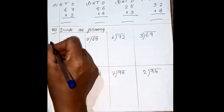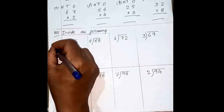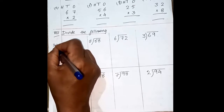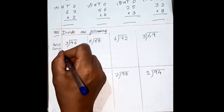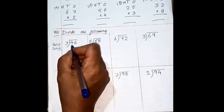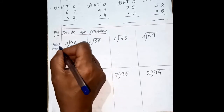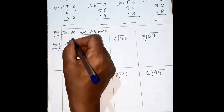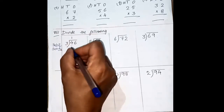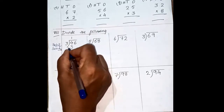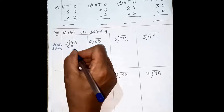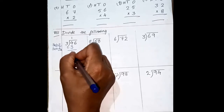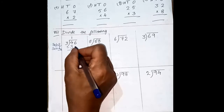Read the table of 3. 3 ones are 3. You can write in the margin column: 3 ones are 3, 3 twos are 6. Your number is 4. We cannot take the greater number; we have to take the smaller number. So it is going one time — 3 ones are 3. After doing the subtraction, 4 minus 3 is 1. 1 is your remainder.